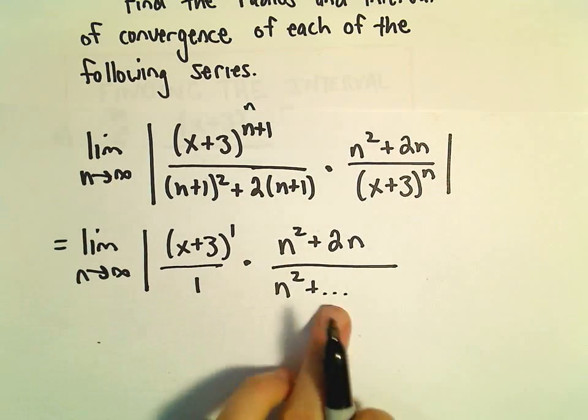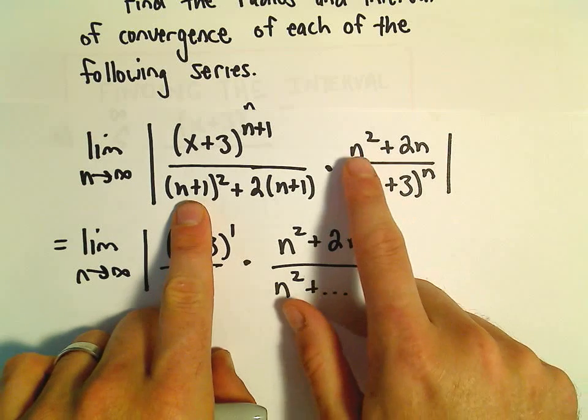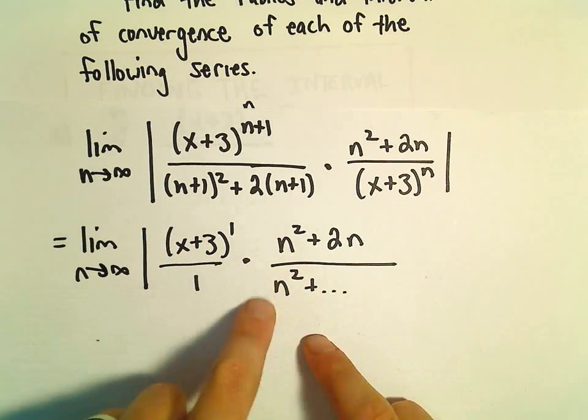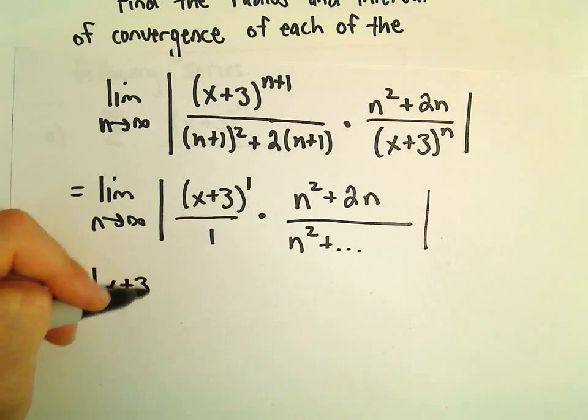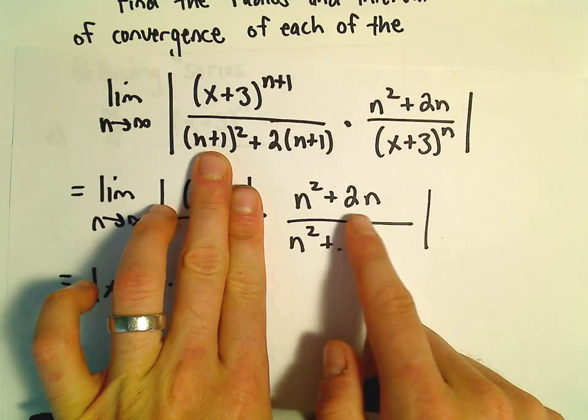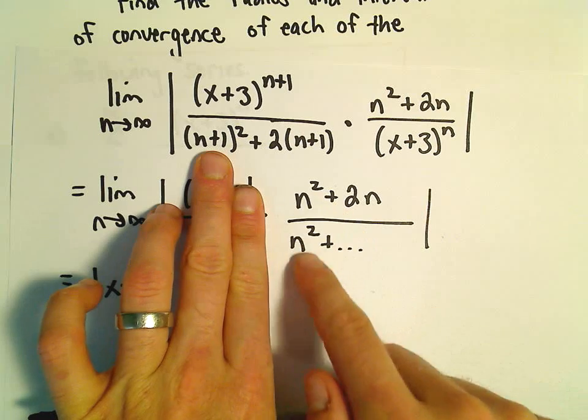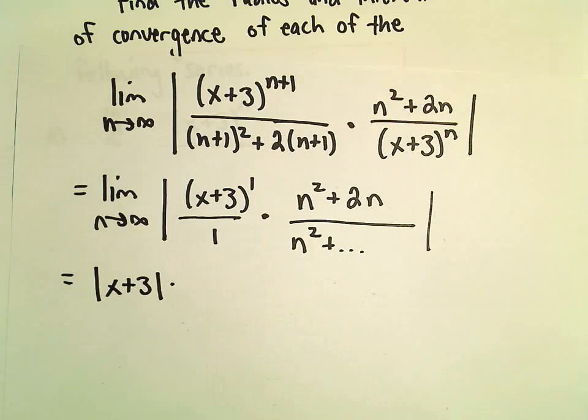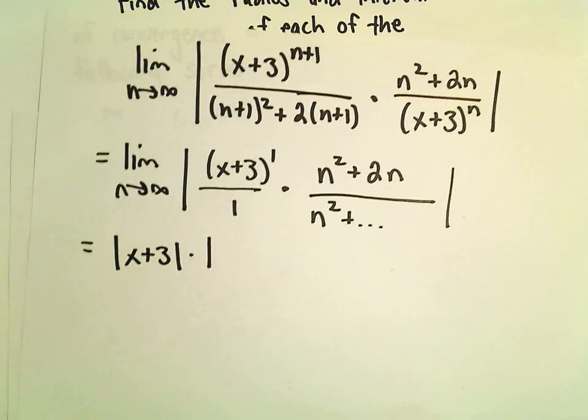So, we'll have some other terms. I'm going to be lazy and not compute them. But again, I'm recognizing that the degree of the numerator is going to be the same as the degree of the denominator. And the coefficients are also going to be the same. So, we can pull out our x plus 3. When we take the limit as n goes to infinity of the n squared plus 2n over n squared plus the rest of the stuff, since the degree of the numerator is the same as the degree of the denominator, we can take the ratio of the coefficients, which will be positive 1. And again, that's going to be our limit.